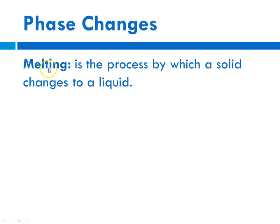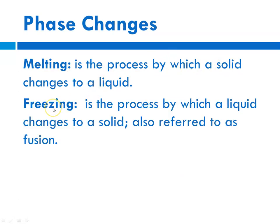Continuing with phase changes: there's melting, the process by which a solid changes to a liquid. And there's freezing, the reverse of this — the process by which a liquid changes to a solid, also referred to as fusion. If you think about both condensation and vaporization and melting and freezing, the difference is: if heat is being absorbed, you would change from solid to liquid; if heat is being released, you would be changing back from liquid to solid.